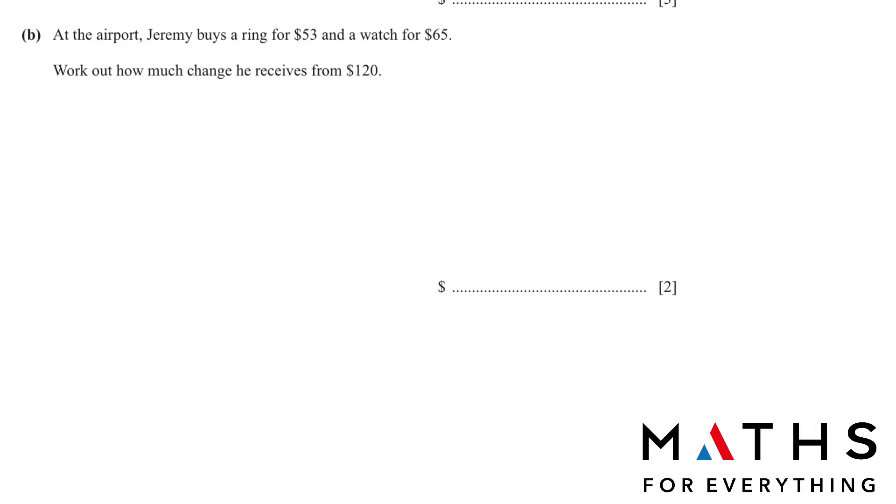At the airport, Jeremy buys a ring for 53 dollars and a watch for 65 dollars. Work out how much change he receives from 120. So he has 120 dollars. From that he buys a ring for 53 dollars and a watch for 65 dollars. He will get 2 dollars back.